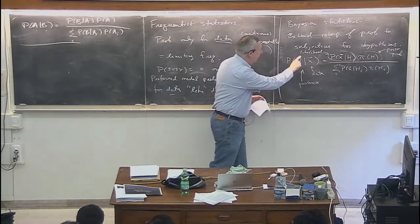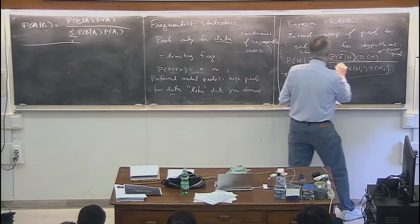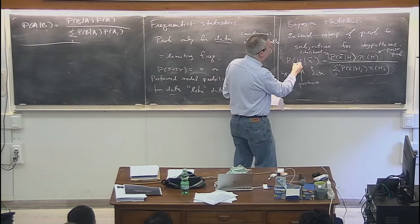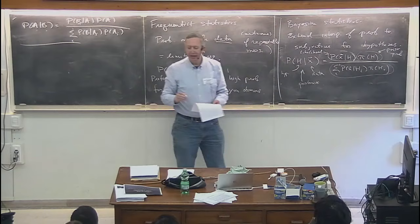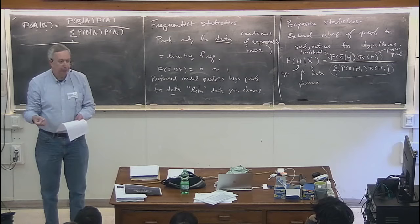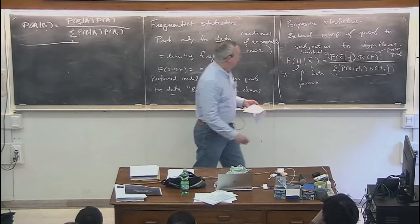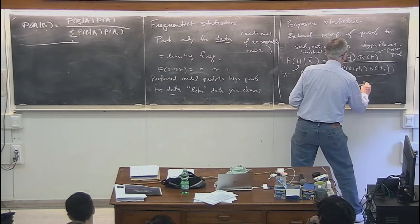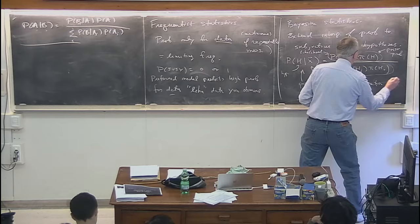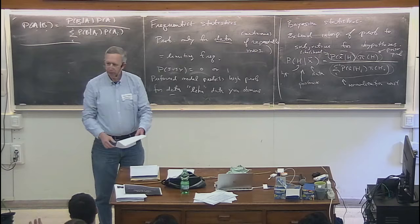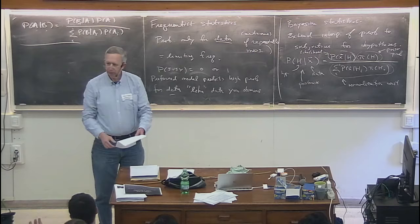The three important ingredients are: posterior, likelihood, and prior. The fourth term in the denominator just plays the role of a normalization constant — summing the probability over all possible hypotheses gives you one, to the extent that your hypothesis space includes one that's true. There are many applications of Bayesian statistics where we just write this expression down as a proportionality: the posterior is proportional to the likelihood times the prior.